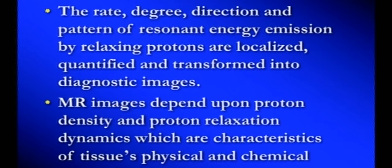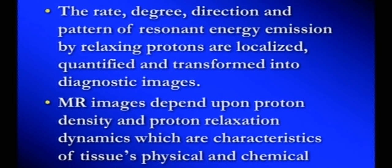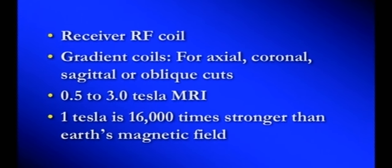MRI images depend upon proton density and proton relaxation dynamics, which are characteristics of each tissue's physical and chemical properties. Hydrogen in water versus fat has entirely different relaxation energy characteristics. Regarding Tesla units: one Tesla is equivalent to 16,000 times the Earth's magnetic field. Higher Tesla gives better resolution but exponentially higher cost, which is why not everyone possesses high-Tesla MRI machines.